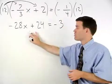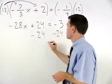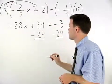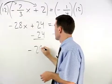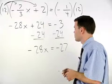To solve for x, we subtract 24 from both sides, and we have negative 28x equals negative 27.